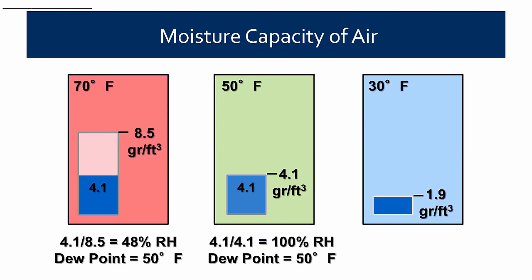The dew point is 50 degrees in this case. By looking at the middle diagram, it's easy to understand why — at 50 degrees, air can only hold 4.1 grains, so it's saturated at 100% relative humidity. At 70 degrees it's 48% relative humidity; at 50 degrees it's 100%. That's pointing to the fact that you really don't want to look at relative humidity, because 100% sounds like a lot, but it's still the same amount of moisture — 4.1 grains per cubic foot.